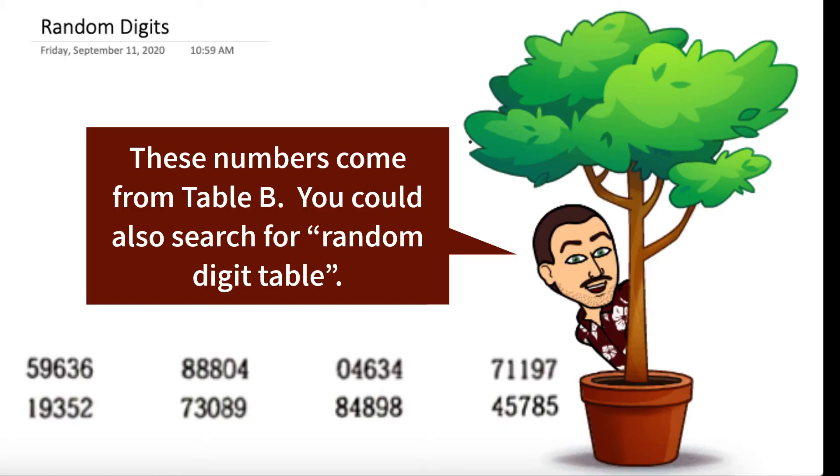This will be a quick one today, but let's do it anyway. Down below, I have a partial list of random digits from a random digit table, which we call table B in class.